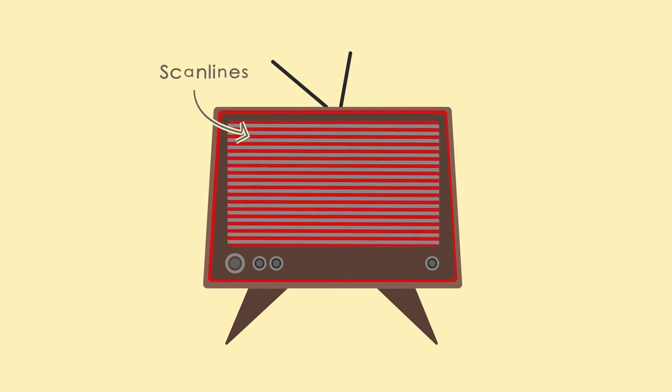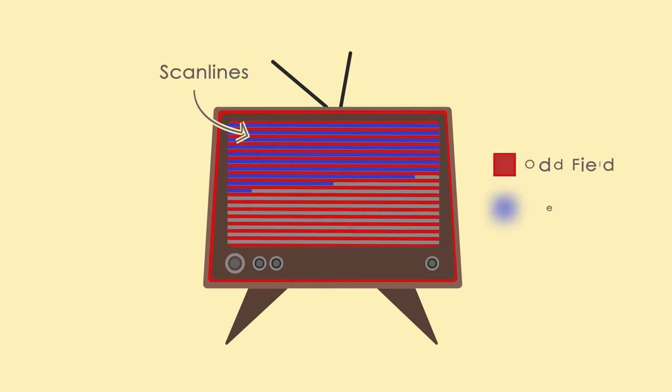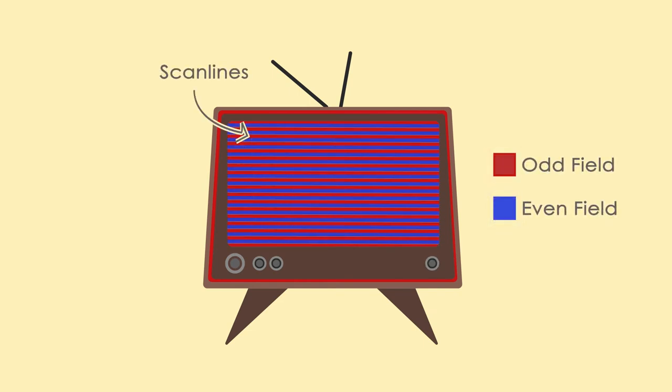An important note: the television would draw the odd lines by skipping every other one on its way down to the bottom, and then go up and fill in every other line. It would do this every second, so each pass was called a field. This procedure is referred to as interlace.